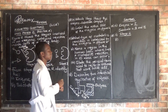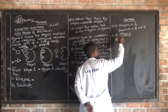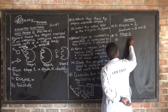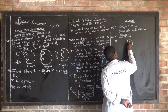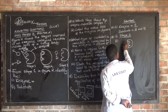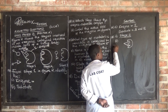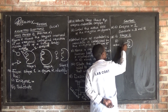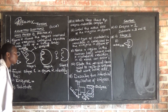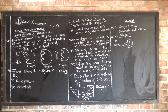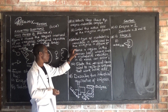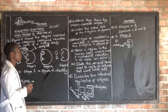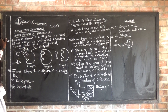Now let us look at question C. Question C has three parts: Roman numerals one, two, and three. Roman numeral one asks: what type of metabolic reaction is catalyzed by the enzyme in figure two? Remember we talked about metabolism — metabolism is the sum total of chemical reactions which take place in the body. There are two types of metabolism: catabolism and anabolism.